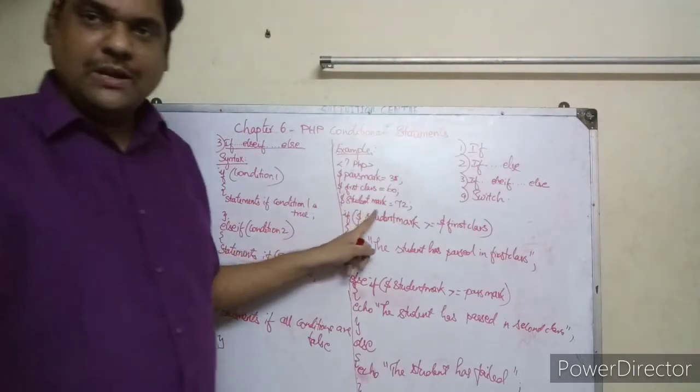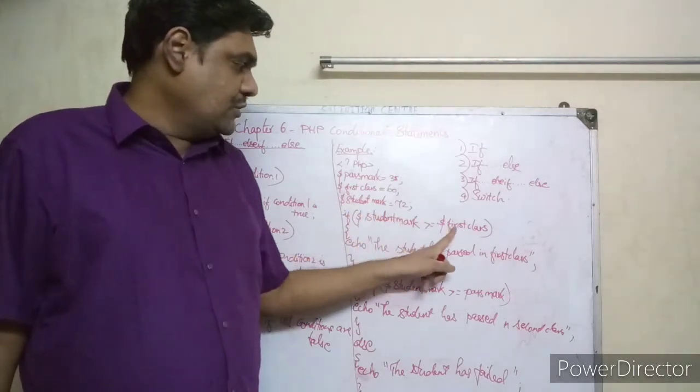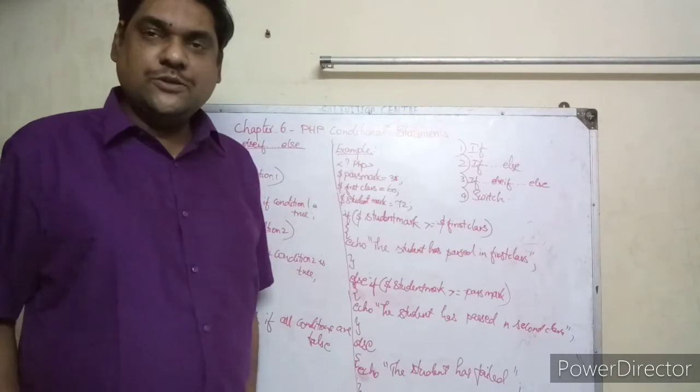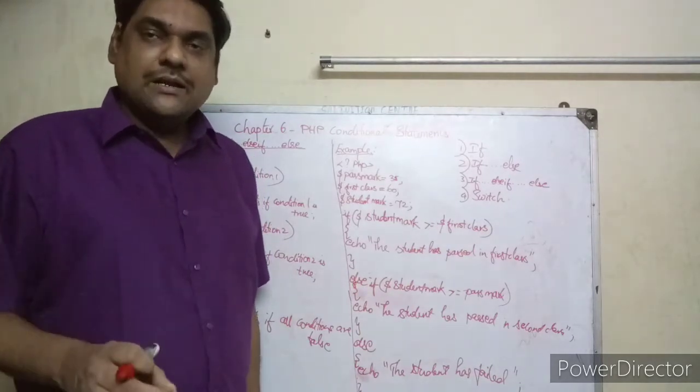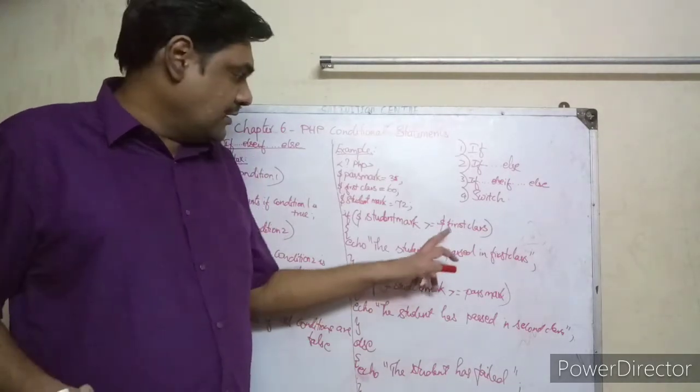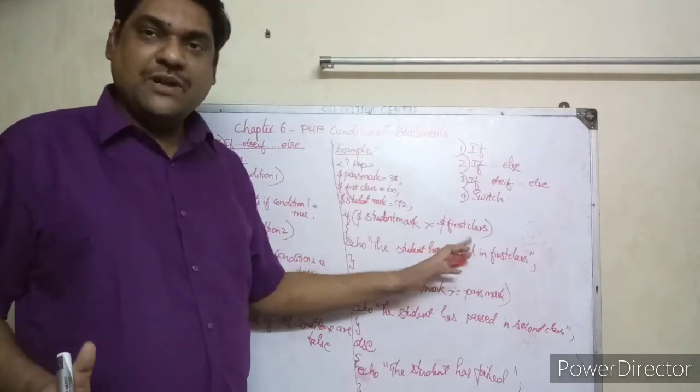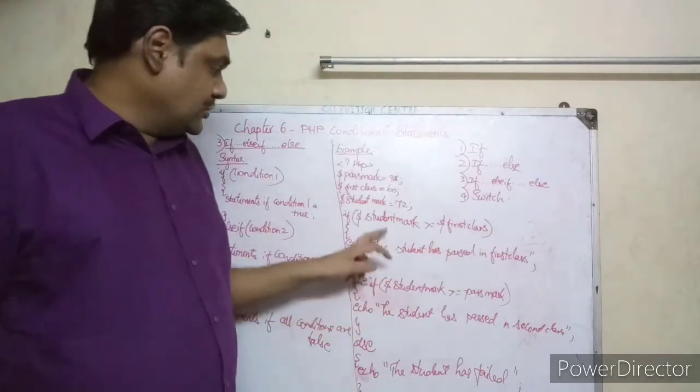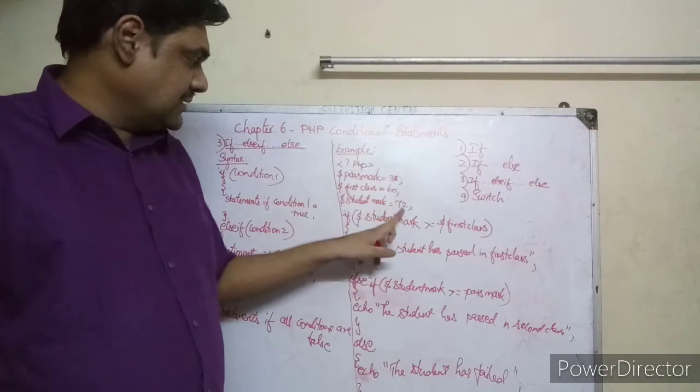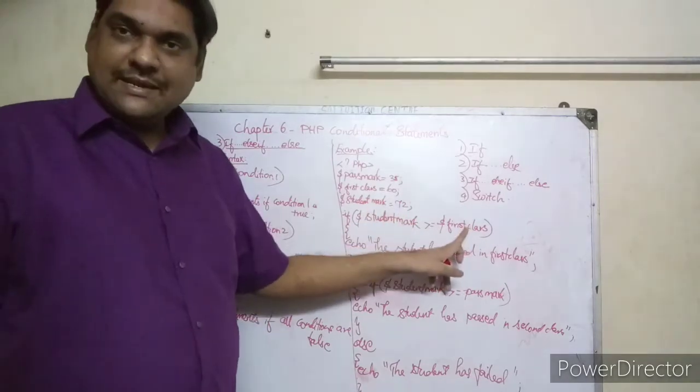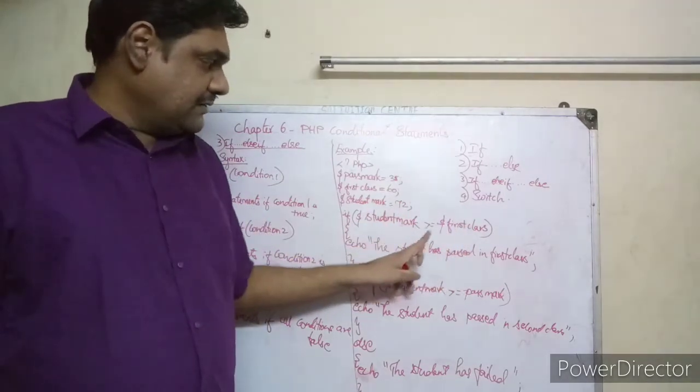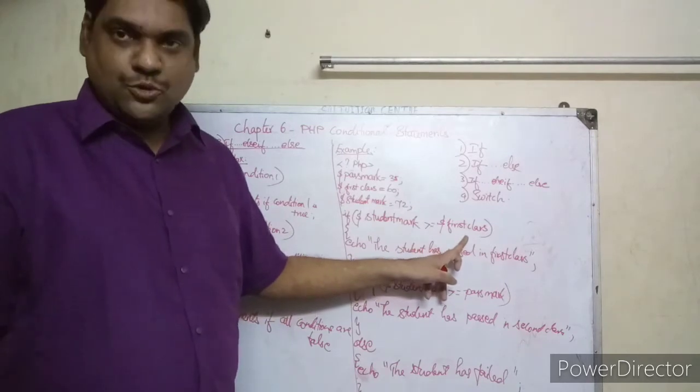If student_mark greater than or equal to 60 - what is there inside student mark? 72. First class line is 60. Is 72 greater than 60? Yes, true.